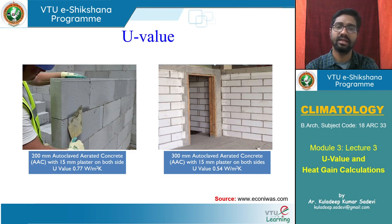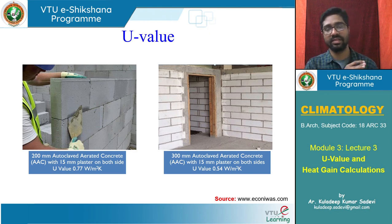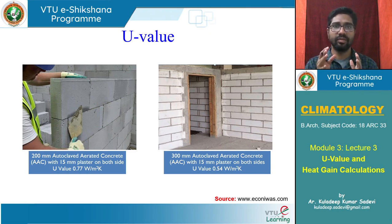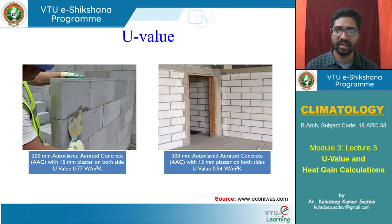The first case is a 200 mm thick wall of AAC blocks, the second case is a 300 mm thick wall of AAC blocks. The 300 mm thick wall should have lesser U-value, because a thicker wall offers more resistance, so heat flow will be lesser. The thicker the wall, the lesser the U-value.